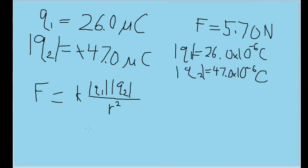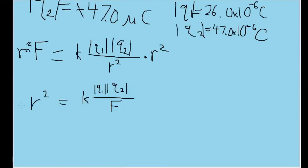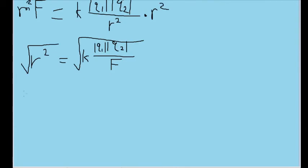Now it's time to find the distance. In our Coulomb's law formula, we have all the values except for the distance between the points — the r in the denominator — and it's what we want to find. So let's rewrite the formula to isolate r. First, multiply both sides by r squared, then divide both sides by F to get r squared on its own, and then take the square root of both sides. Our formula now says that r, or the distance between the points, is equal to the square root of k times the charges over the force.